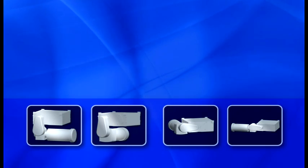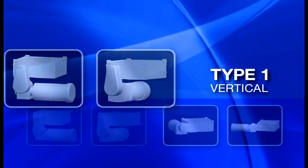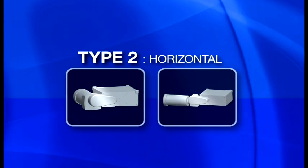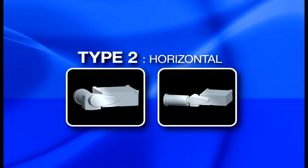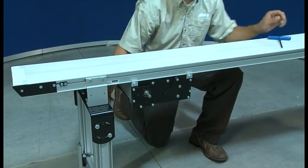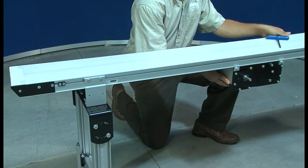Your gear motor can be mounted in one of two positions. Type 1 vertical with the gear motor below the center drive module or type 2 the preferred position horizontal with the gear motor adjacent to the center drive module. The type 2 position allows easy access to the center drive module for servicing.